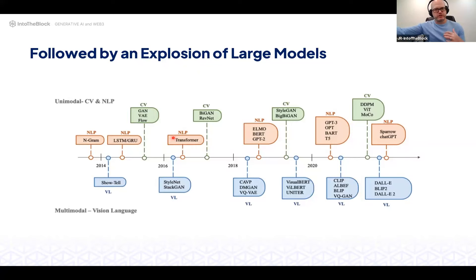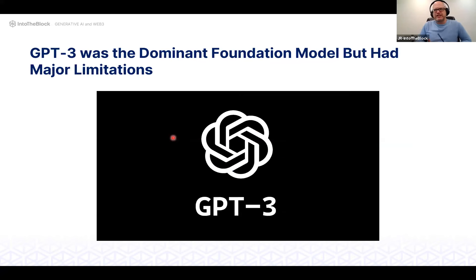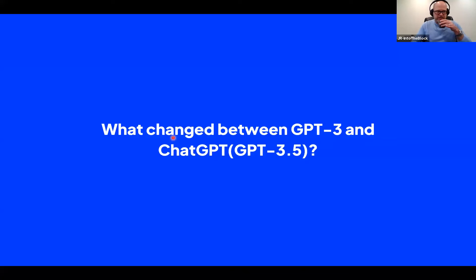The transformer architecture unlocked the 'bigger is better' paradigm and created a race to build the largest models among OpenAI, DeepMind, Google Brain, and Microsoft Research. GPT-3 was becoming the dominant model, but it wasn't particularly impressive or mainstream — there were plenty of use cases it couldn't address.